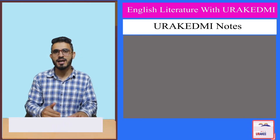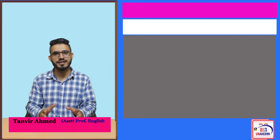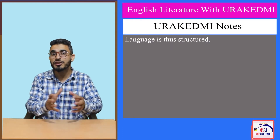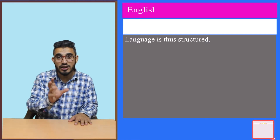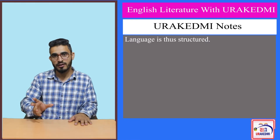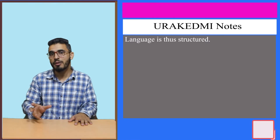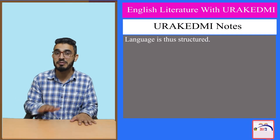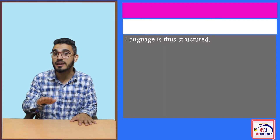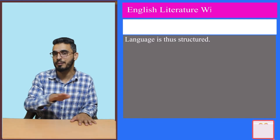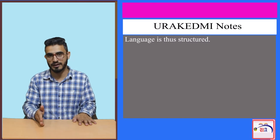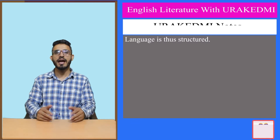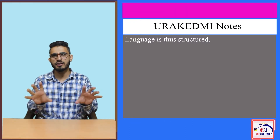After doing this, what Ferdinand de Saussure says is that language is a structured kind of thing — it's a complete and unified whole. Because if it's a complete and unified whole, only in that scenario can we simplify it from that complexity. He has structured this language and told us that it's all about linguistics.